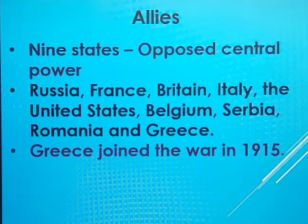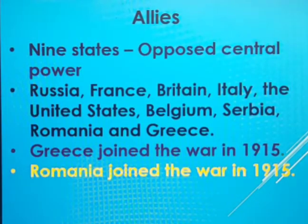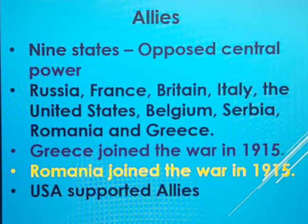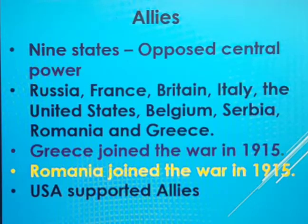In the beginning, USA did not interfere in the war for the first three years. Greece joined the war in 1915, and Romania joined in 1916. USA did not interfere in the war initially but later rendered its support to the allied powers and also gave financial support to the allied powers.